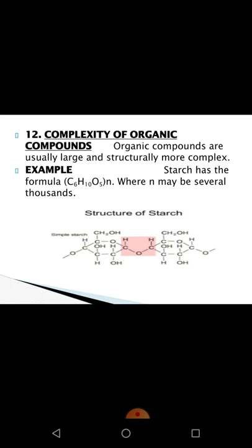For example, starch has the formula C6H10O5 repeated n times, where n may run into several thousands. Starch structures are large and structurally complex. Similarly, proteins are really complex molecules having molecular masses ranging from a few thousands to a million.